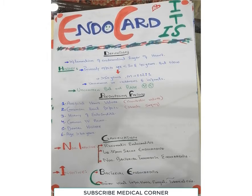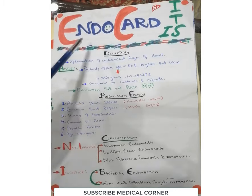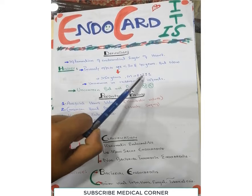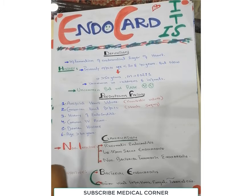In history, endocarditis is one of the challenging and difficult conditions for general physicians as well as cardiac physicians. Previously it affected ages less than 30 to 40 years, but now endocarditis mostly affects ages above 50 years, and the male to female ratio is 2:1. Although it is uncommon in children and infants, it is nowadays an uncommon disease due to the invention of antibiotics, but it is not rare.